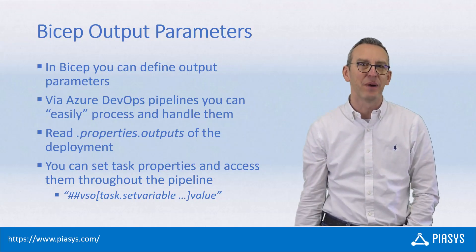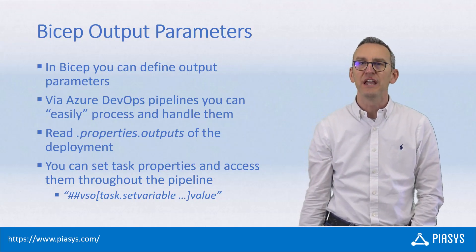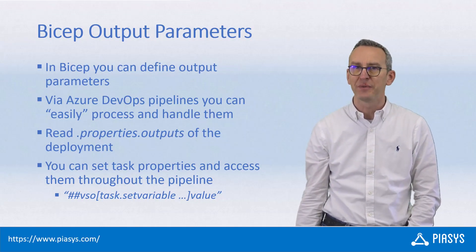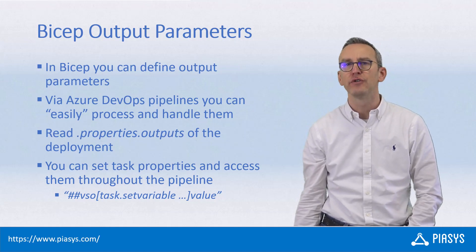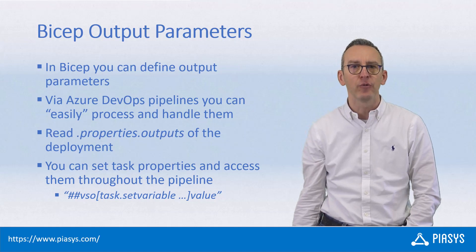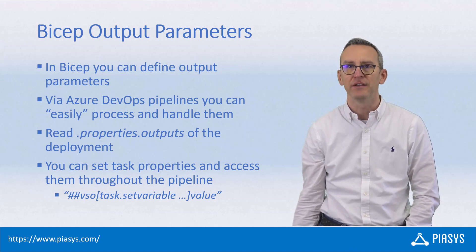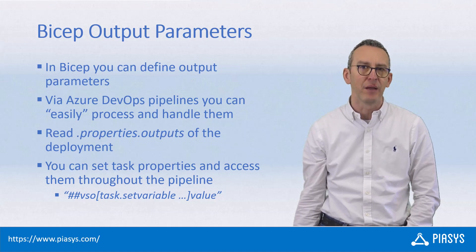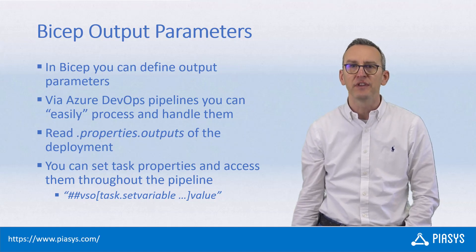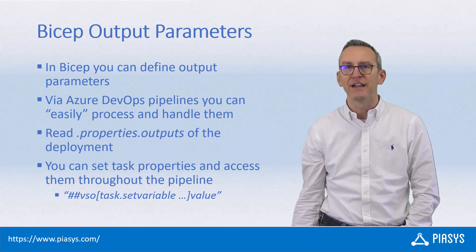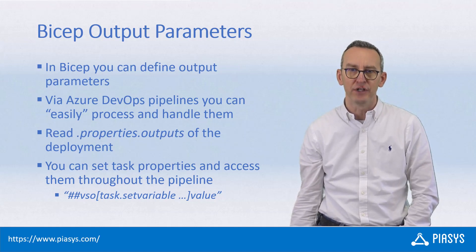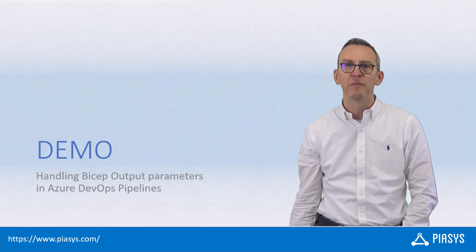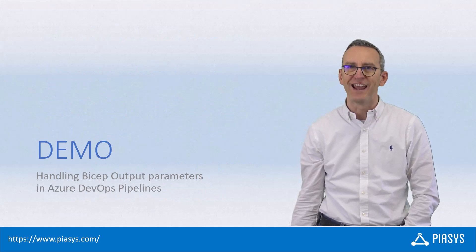Welcome back to PSC Stackbytes. Today we keep on talking about using BICEP templates inside Azure DevOps pipelines. I want to show you how you can define output parameters in a BICEP template so that you can retrieve those output parameter values inside the pipeline and use them to provide additional arguments to the tasks inside your pipeline definition. Let me switch to the demo environment and show you how to do that in action.